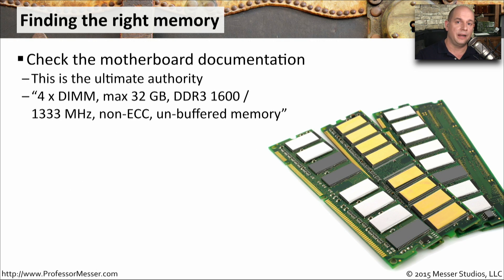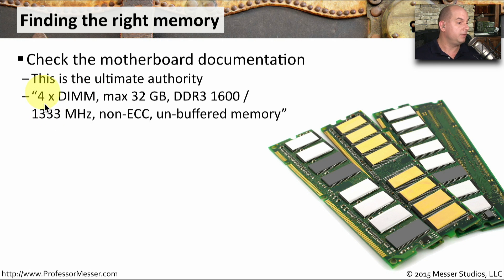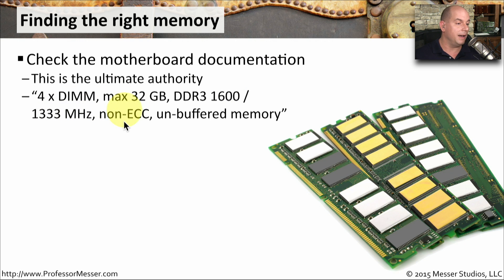If you're looking to upgrade or install memory, you'll quickly find many different specifications online. Memory has very tight tolerances — you need exactly the right memory for your motherboard, so your first stop should be your motherboard documentation. Looking at an example manual, it shows 4x DIMM slots, a maximum of 32 gigabytes, expecting DDR3 1600/1333 megahertz, requiring non-ECC and unbuffered (non-registered) memory modules. You must get exactly this specification for it to work properly.